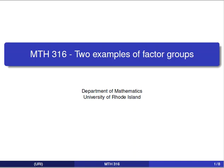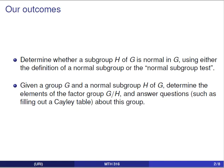In this video we're going to take a look at two examples of factor groups. Our outcomes are these: we'll review how to determine whether a subgroup H of a group G is a normal subgroup, we'll do that in two different ways, and then given a group G and a normal subgroup H, we're going to talk about how to find the elements of the factor group G mod H and answer questions about the resulting group.